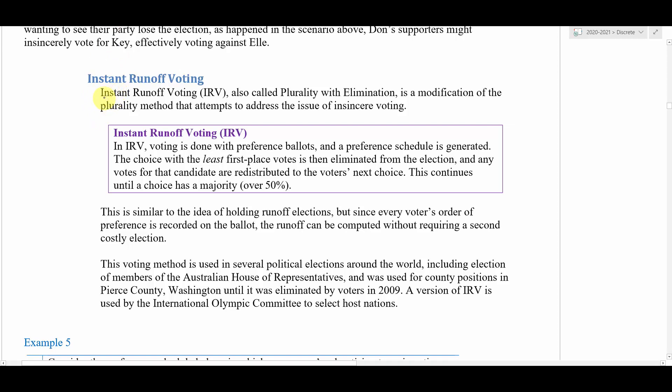This will be our third voting system called instant runoff voting, also called IRV. In other places it's called plurality with elimination. Maybe in other textbooks or other institutions that use this type of voting system it's called plurality with elimination, and you'll see why once we get into doing it. The definition of how instant runoff voting works is summarized here in this box, but I think it's a lot easier to understand just by seeing it done.